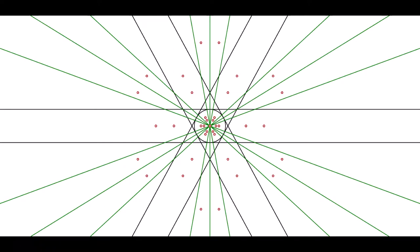There are fewer than 60 because with all that symmetry, some of them coincide. The green lines represent infinitely distant Brianchon points. And here are the Pascal lines of the regular hexagon. Again, there would be 60 if not for all the symmetry.